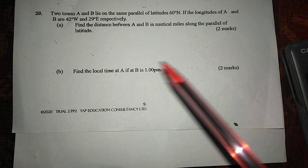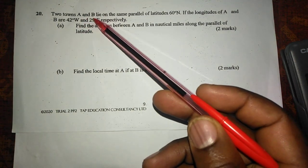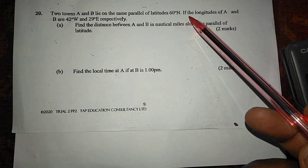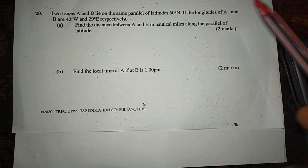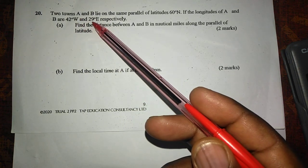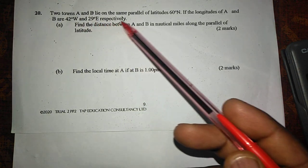We are told that two towns, A and B, lie on the same parallel of latitude, 60 degrees north. If the longitudes of A and B are 42 degrees west and 29 degrees east respectively, part A, find the distance between A and B in nautical miles along the parallel of latitude.